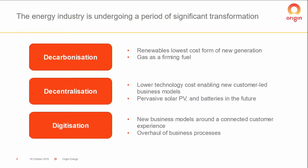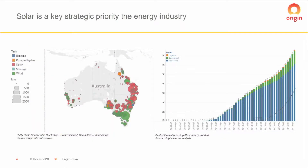Decarbonization is fairly self-explanatory — this is a challenge facing humanity collectively, and energy is a large part of this. Decentralization is an interesting one. The traditional method of getting electricity to a home is a power plant that supplied tens of thousands of customers, with electricity transported by copper cables to homes. What we're seeing now is customers increasingly having the ability to generate their own electricity and store it on their property — a paradigm shift. Digitization is not unique to energy; in virtually every industry we're seeing consumers wanting to interact with their retailers more and more digitally. A key theme that touches each of these is renewables, and in particular solar.